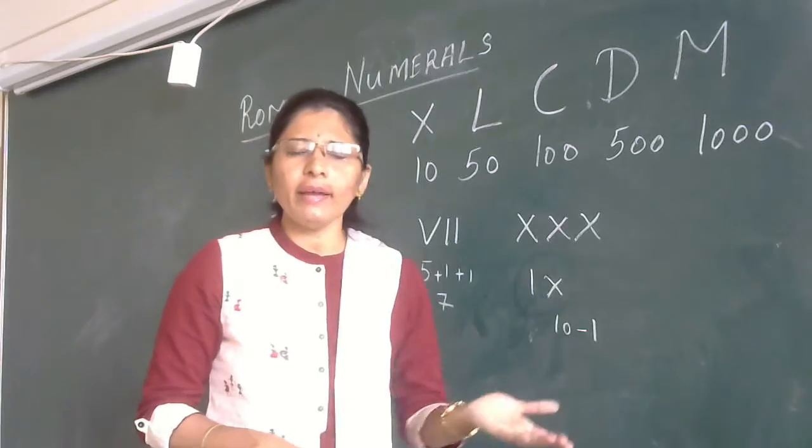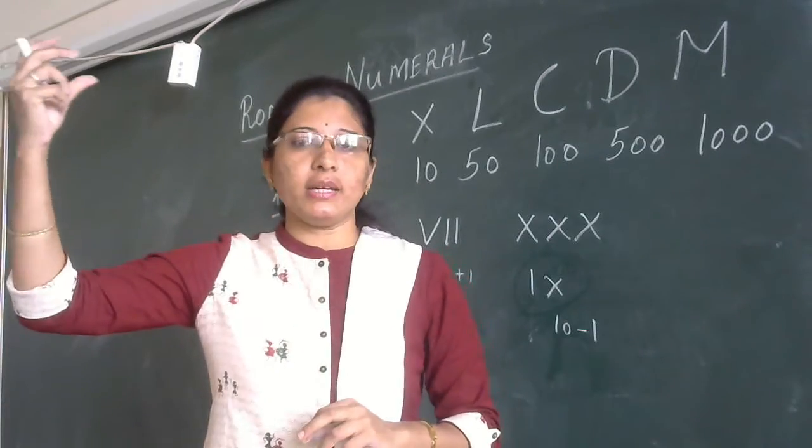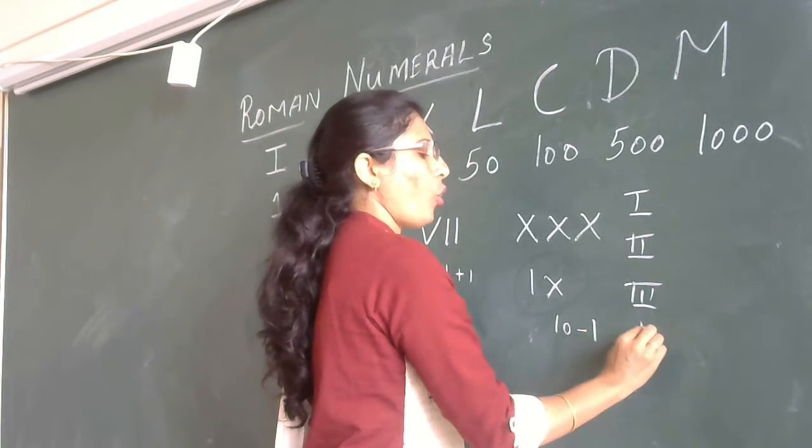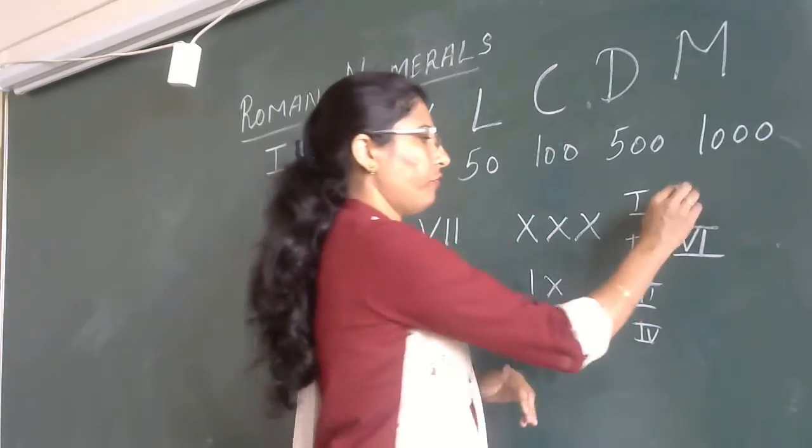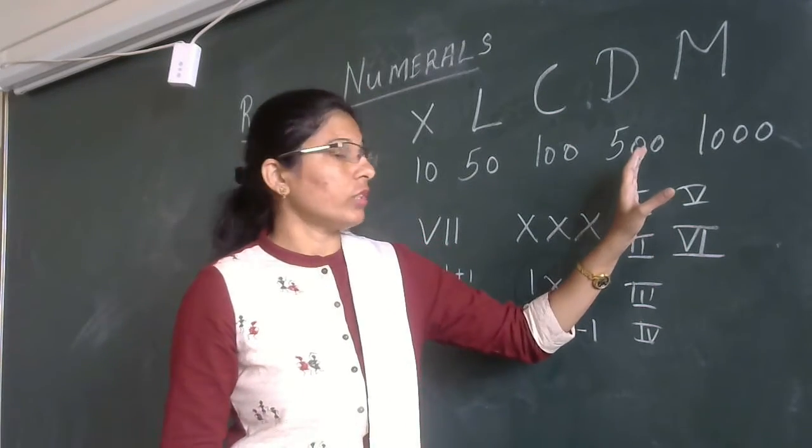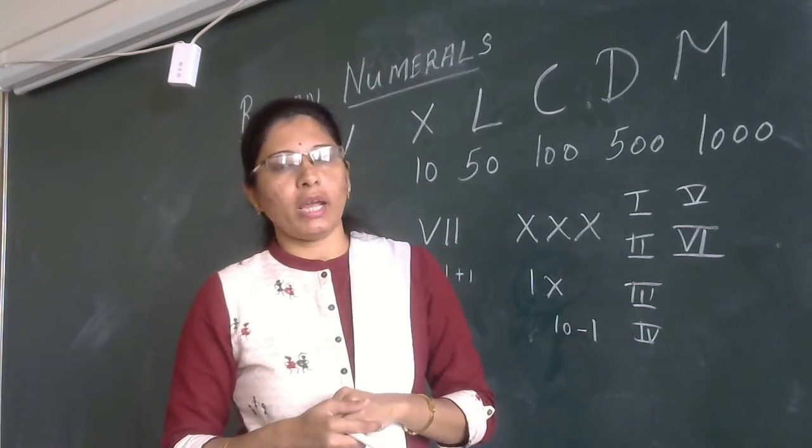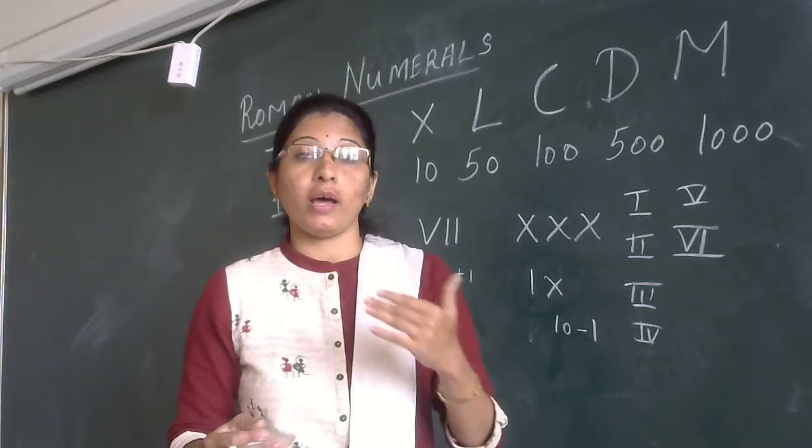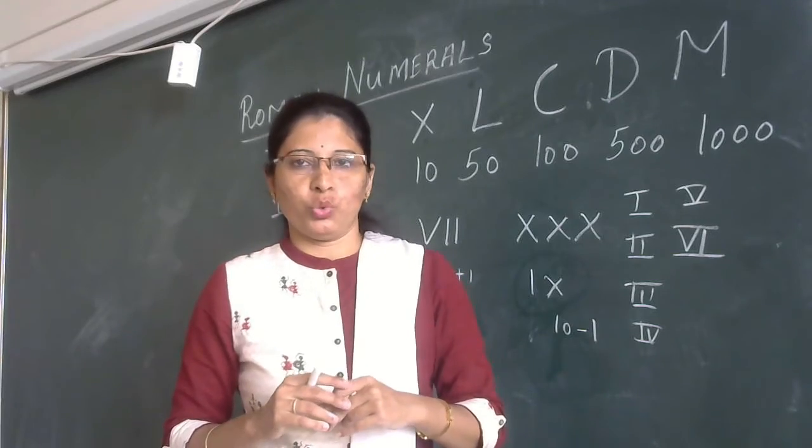Where can we use Roman numerals in our day to day life? Your classes are represented using these symbols: first, second, third, fourth, fifth, sixth, seventh, eighth. In some places, big clocks use Roman numerals. And to represent historical events like World War I, World War II. In some places these Roman numerals are used.